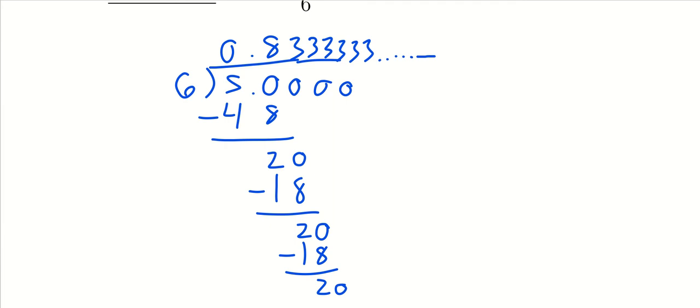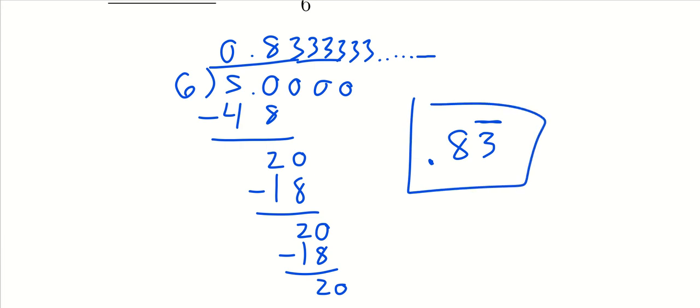This is why we call it a repeating decimal. The way we typically write this is: put down 0.8 and then put a bar over the digit or sequence that repeats. Here the 3s are repeating, so we write 0.8 with a bar over the 3. That is equivalent to 0.83333..., which is our first example of a repeating decimal.